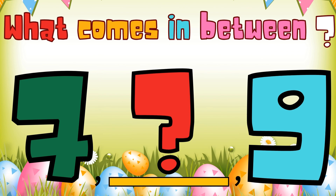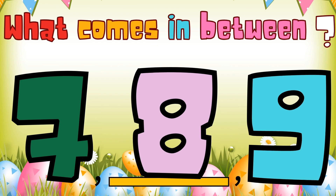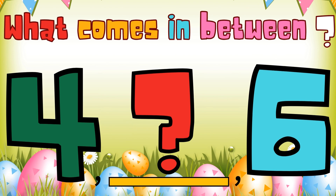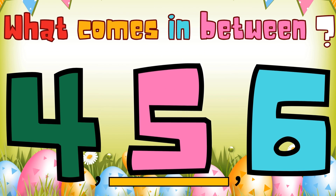What comes in between seven and nine? The answer is eight. What comes in between four and six? The answer is five. And the last question is: